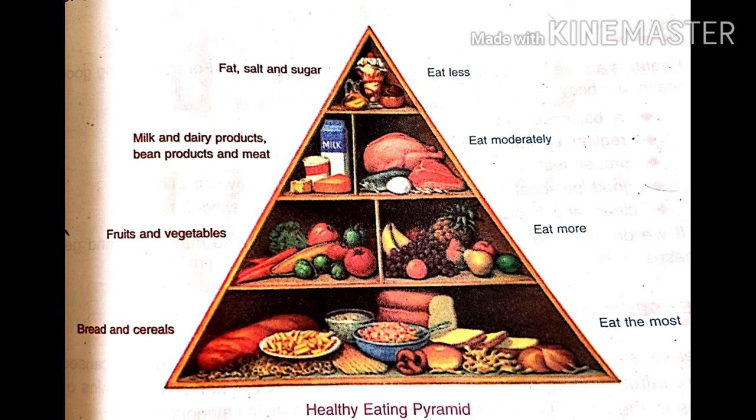Now children, we will observe the healthy eating pyramid. Aap dek sakte hain ki sabse neeche waali shelf mein sabse zyada space hai jahan rakha gaya hai bread and cereals ko, which we can eat the most. Usse oopar waali shelf mein jahan space thoda kam ho gaya hai, fruits and vegetables are kept there which we can eat more.